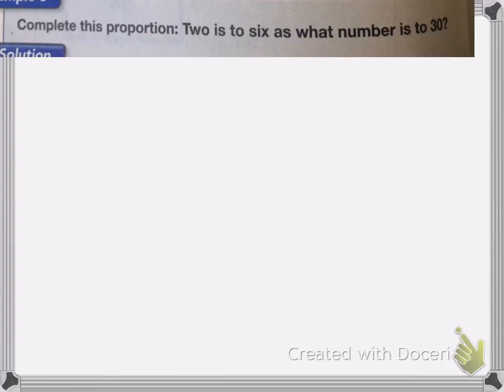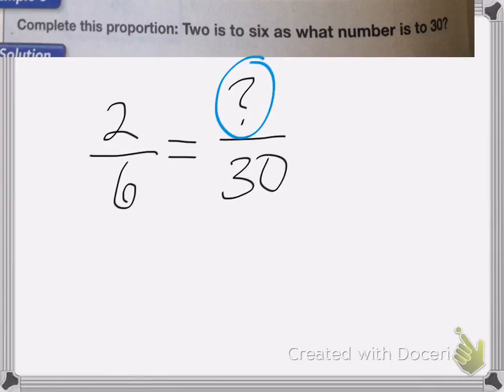On this next one, complete this proportion: two is to six as what number is to thirty. So let's write it out first. Two is to six as what number is to thirty, and I need to solve for this question mark.